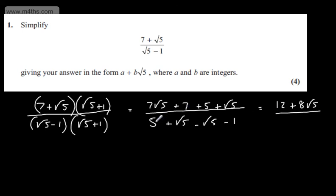Then in the denominator, we're going to have 5 minus 1. The plus root 5 and minus root 5 will cancel, so that will leave me with 4.